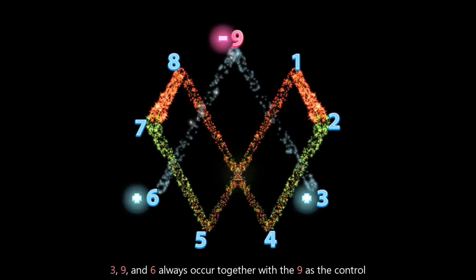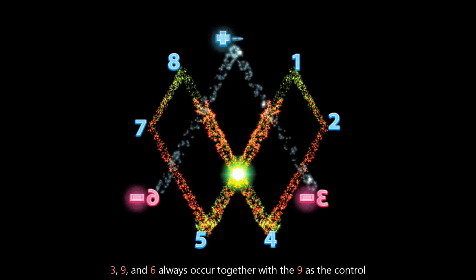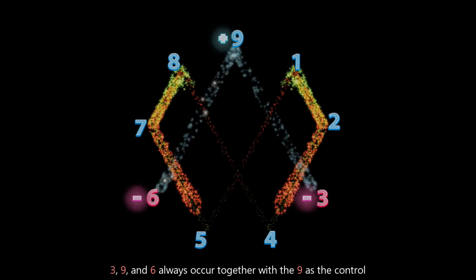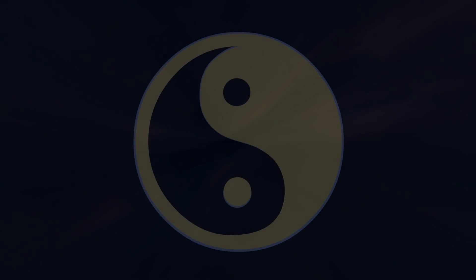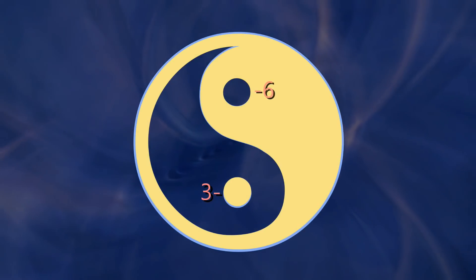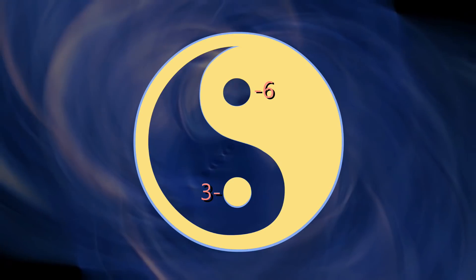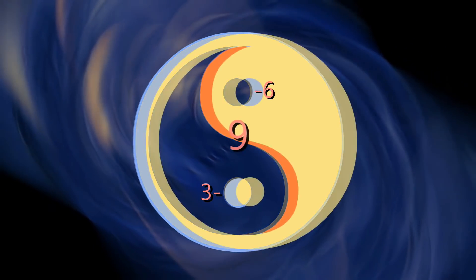The 3, 9, and 6 always occur together, with 9 as the control. In fact, the yin and yang is not a duality, but rather a trinity. This is because the 3 and the 6 represent each side of the yin and the yang, and the 9 is the s-curve between them.